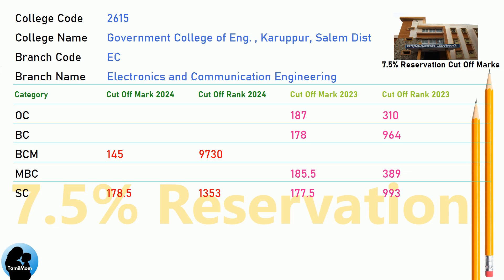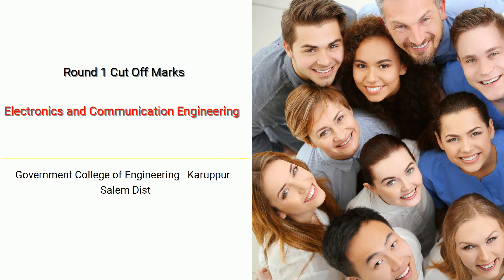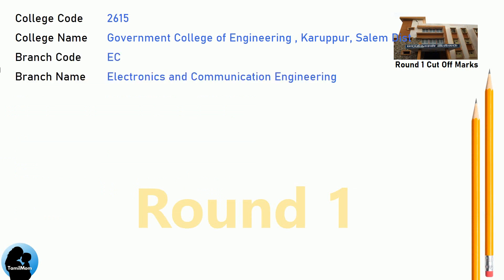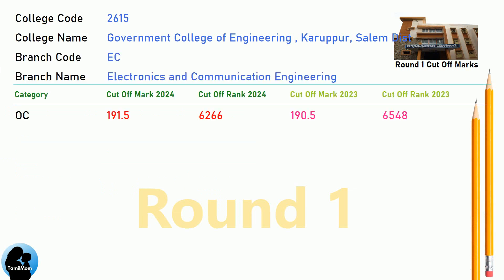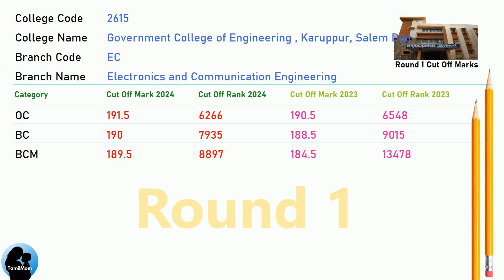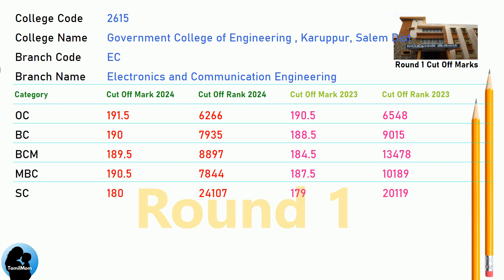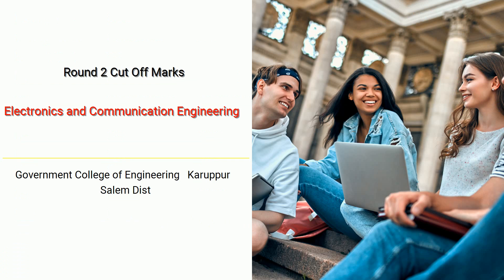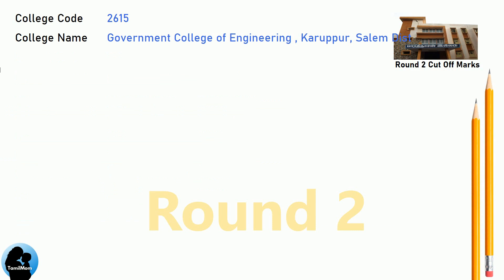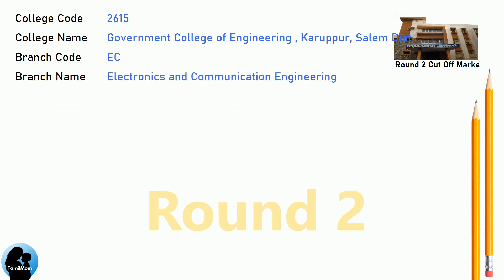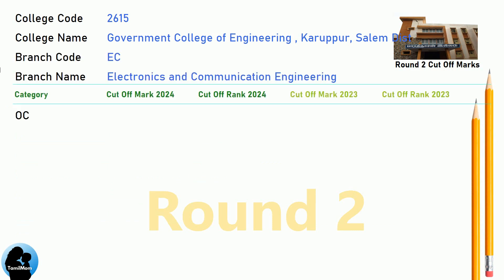BNEA Round 1 Cut-off for Government College of Engineering, Karupur, Salem District in Electronics and Communication Engineering. BNEA Round 2 Cut-off for Government College of Engineering, Karupur, Salem District in Electronics and Communication Engineering.